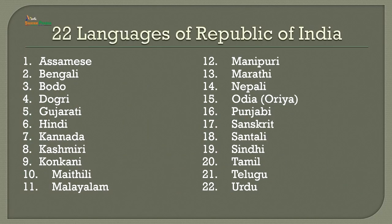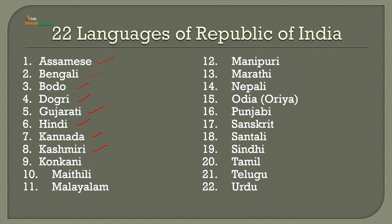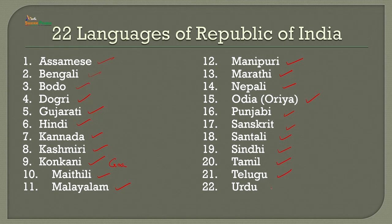There are 22 official languages of the Republic of India. They are: Assamese, Bengali, Bodo, Dogri, Gujarati, Hindi, Kannada, Kashmiri, Konkani (of Goa), Maithili, Malayalam, Manipuri, Marathi, Nepali, Odia, Punjabi, Sanskrit, Santali, Sindhi, Tamil, Telugu, and Urdu.